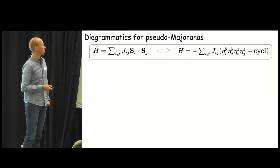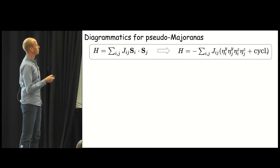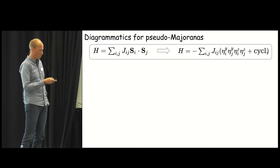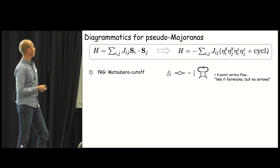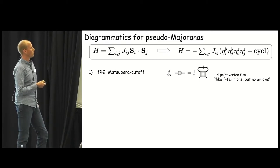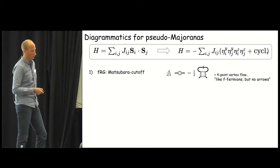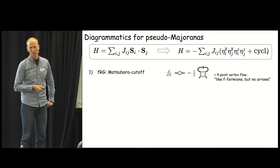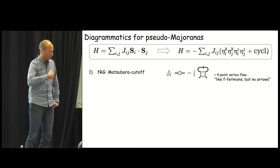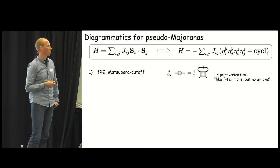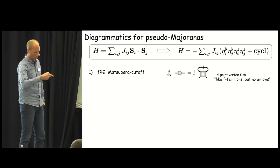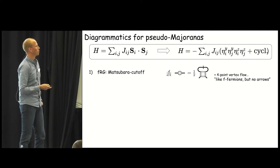Now we need to do the diagrammatics for pseudo Majoranas. The Hamiltonians that we have to deal with when we put our eta times eta for each spin in are purely interacting four Majorana Hamiltonians. And we can of course re-derive the functional RG flow equations for this Majorana Hamiltonians, again using a Matsubara frequency cutoff. And these flow equations look very similar to the complex fermionic flow equations. It's even a bit simpler. Because there are no arrows associated to the lines, to the propagator lines. Because we do not distinguish between Majorana creation and annihilation operators.